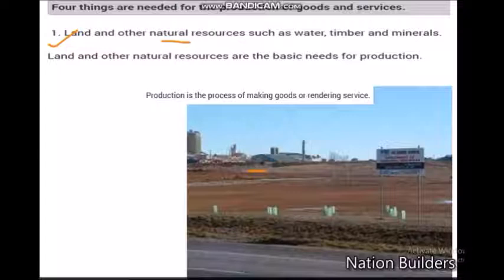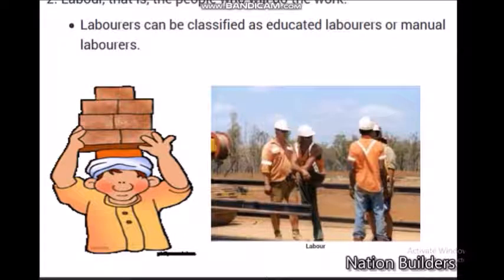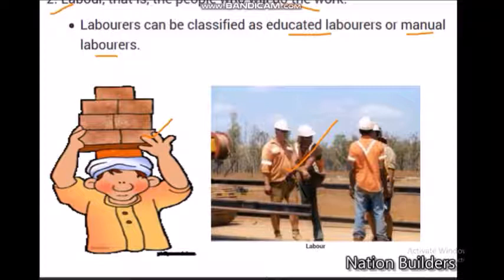Along with land, natural resources such as water, timber, and minerals are also needs of production. The next requirement is labor — the people who do work. They provide the workers. Labor can be classified into educated and manual workers. Both skilled and unskilled workers are needed. Each worker provides the labor necessary for production, and this is the second important factor needed for production.